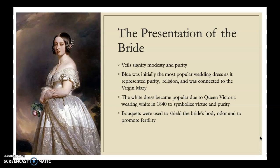Wedding dresses were typically any color except for green, as green was seen as unlucky. They were usually very rich in color — red was a popular choice, and blue was extremely popular because it represented purity and religion and was connected to the Virgin Mary. The white wedding dress came about due to Queen Victoria wearing white in 1840 to symbolize virtue and purity, and from there wearing white was seen as a sign of status, as those cloths were very expensive.